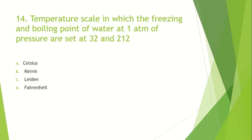Temperature scale in which the freezing and boiling points of water at 1 atm of pressure are set at 32 and 212: Option A: Celsius. Option B: Kelvin. Option C: Leiden. Option D: Fahrenheit. The answer is Fahrenheit.